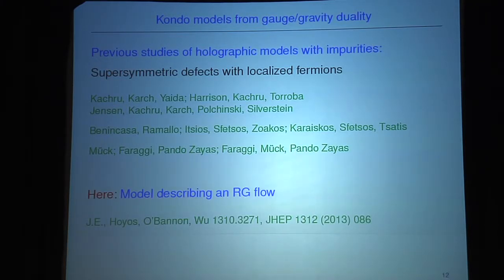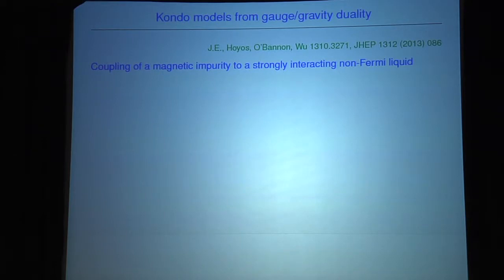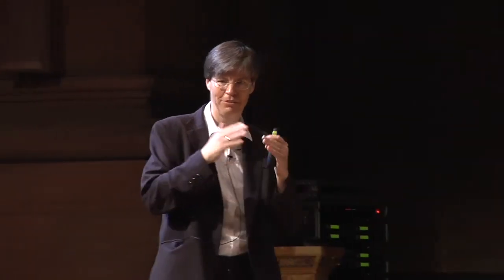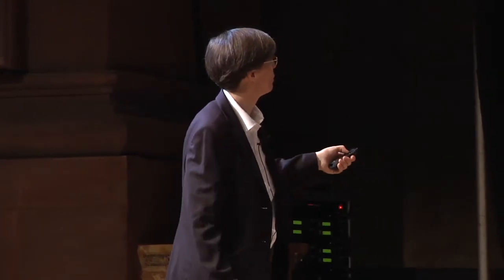The new thing about our model, obtained in collaboration with Carlos Hoyos, Andreas O'Bannon, and Jackson, is that we actually managed to describe the entire RG flow. One important point is a big difference from the standard Kondo model: in the standard model you have a free electron gas with one Kondo coupling. However, we do holography in the Maldacena limit, which means our gas of electrons given by the N=4 theory is already strongly coupled — the 't Hooft coupling is large before we add the impurity. So we couple a magnetic impurity to a strongly interacting non-Fermi liquid.